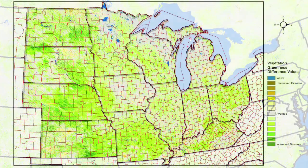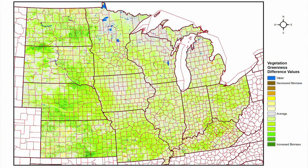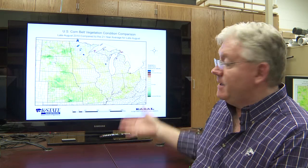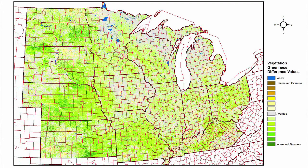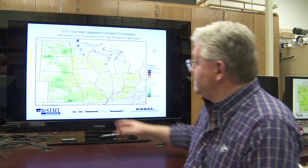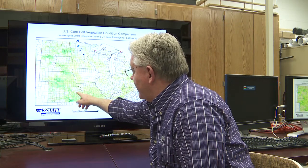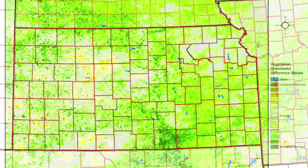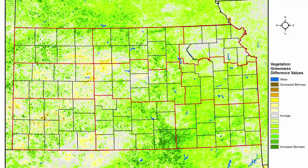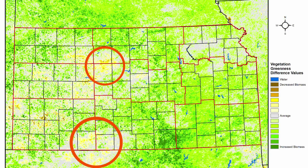Now we can zoom into what we call the Corn Belt for people who are interested in corn and soybean. You can see here in Iowa they're about normal in some areas, and that's up in the area where they produce a lot of the corn and soybean. We can see in Kansas we're about normal here but we are lower than normal in some areas. Here's the zoom in on Kansas and what this is showing us is that we've got some stress up in these areas.